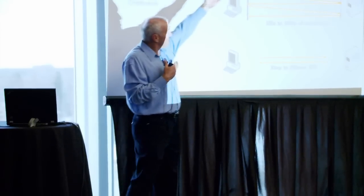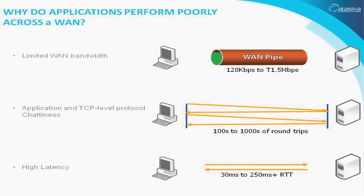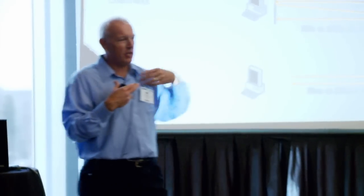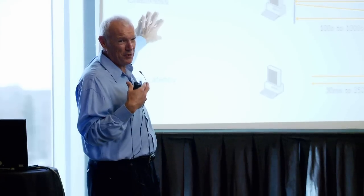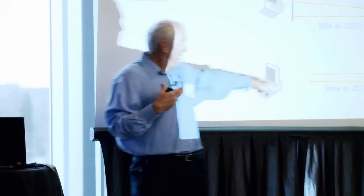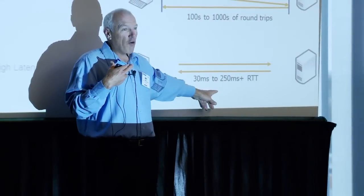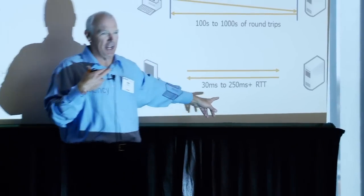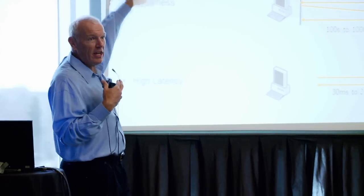What we want to do is have people in the branch office and mobile workers get the same response time as users who reside in the data center. The goal is to make this WAN feel like a LAN. In a WAN you've only got so much bandwidth. There's chattiness — acknowledgments going back and forth — and this is not evil, it's what guarantees data gets where it's supposed to go intact. The challenge is latency. I'm only saying 250 milliseconds here, but I've got customers with over 1.2 seconds — 1,200 milliseconds of latency. I just did a network for a cruise line where some of their ships have 1.2 seconds of latency all the time.